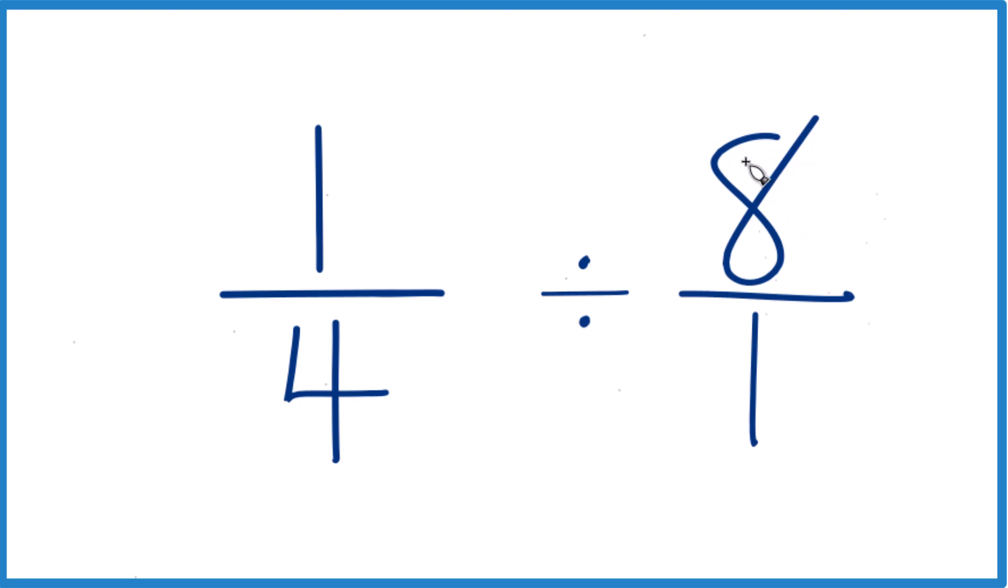Then I'm going to take the reciprocal of 8 over 1. So I'm going to move the denominator to the top and the numerator to the bottom. That's the reciprocal.